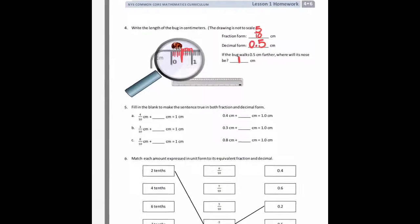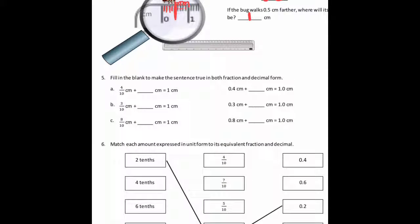Okay, on question five, it says fill in the blank to make the sentence true in both fraction and decimal form. So 4 tenths of a centimeter plus what would give you a whole centimeter? Well, 4 tenths plus what gives you a whole? Well, 6 tenths plus 4 tenths would give you 10 tenths, which is a whole, so 6 tenths here. And then to the right, 0.4 plus 0.6 would give you 1, just like 4 tenths plus 6 tenths.